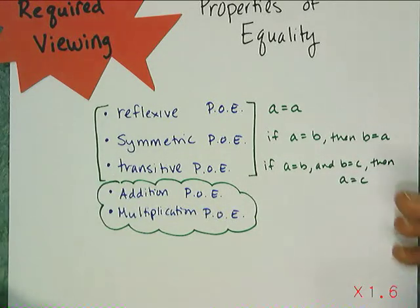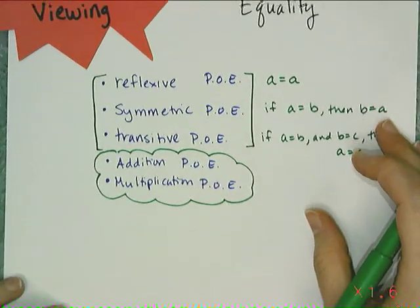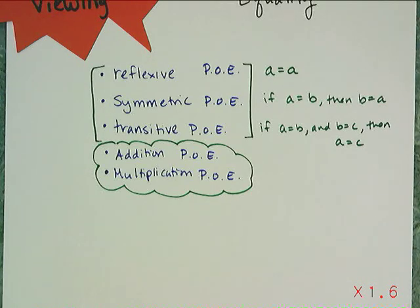And what multiplication's property of equality says, it says that I can multiply both sides of an equation by something, and it'll stay equal, as long as it's not zero. Don't multiply both sides of an equation by zero, because that gives you nothing but zero.